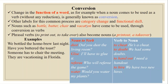Our last word formation process in this lecture is conversion. Conversion is a change in the function of a word — for example, when a noun comes to be used as a verb. Other labels for this process are zero derivation and functional shift. Nouns such as bottle, butter, chair, and vacation come to be used as verbs in conversion. Similarly, phrasal verbs like 'to print out' or 'to take over' also become nouns — a printout and a takeover.